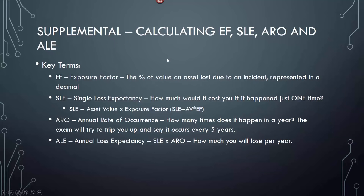The supplemental section covers calculating EF, SLE, ARO, and ALE — terms you're going to have to know, memorize, and calculate. EF is exposure factor: the percent of value an asset lost due to an incident, represented as a decimal. If you have a thousand dollars and lost 800, that's an 80% exposure factor. SLE — single loss expectancy — is how much it would cost you if it happened just one time. SLE equals asset value (AV) times exposure factor (EF).